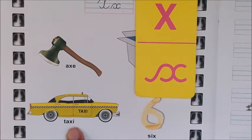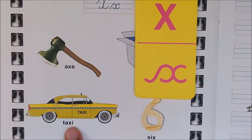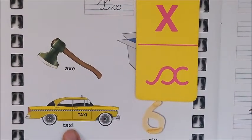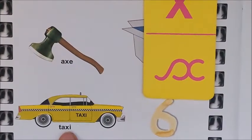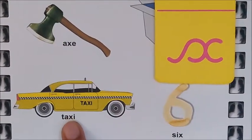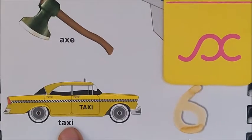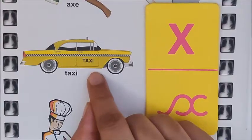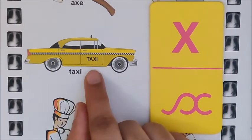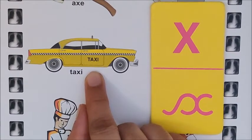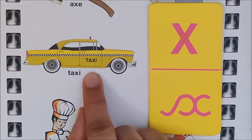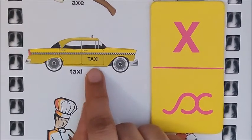Taxi. Repeat after me children: Taxi. Did you hear the sound of X in taxi? This word also has the X sound. Children, taxi is a public transport. To sit in a taxi you have to pay money, and then you can go to the place where you want to go.